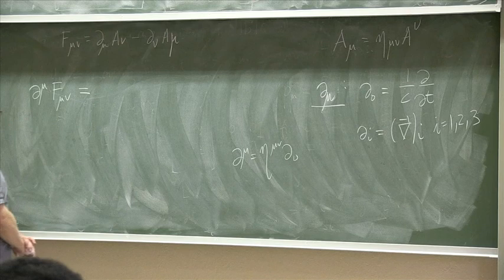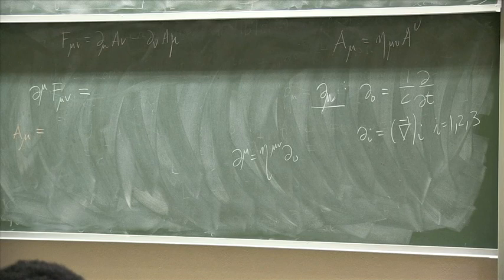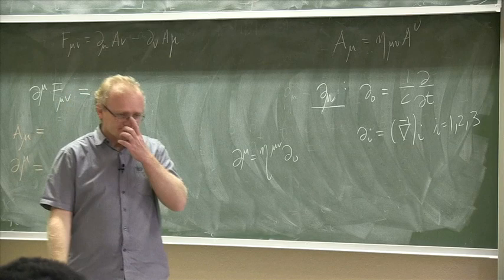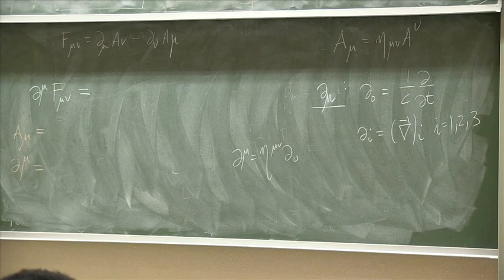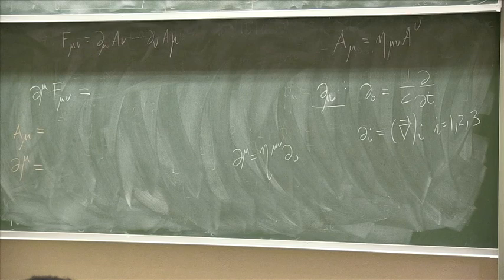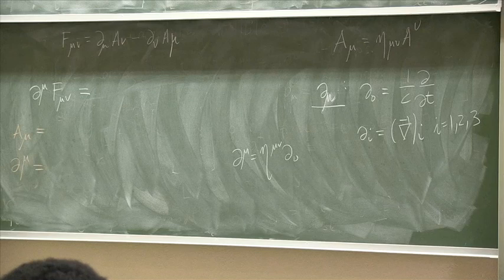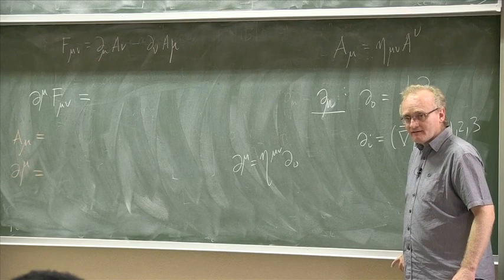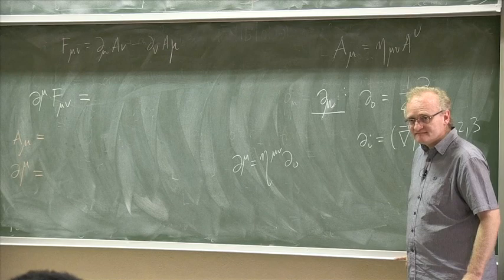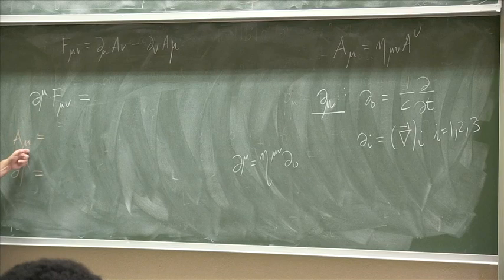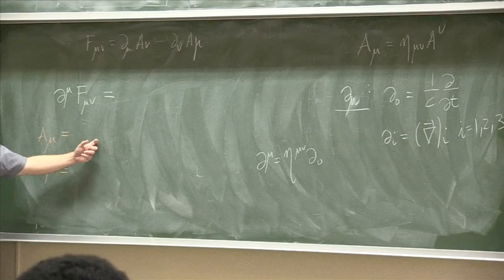Now I want you to calculate: what is A_mu with the index down, and what is D_mu with the index up? Let's start by working those out. If you're stuck, put up your hand.